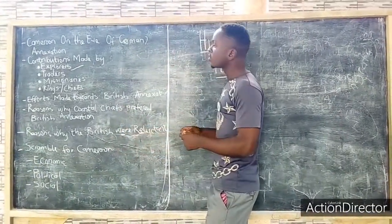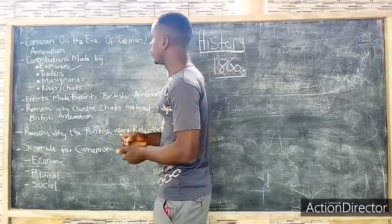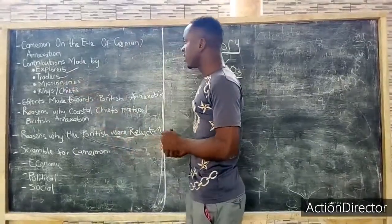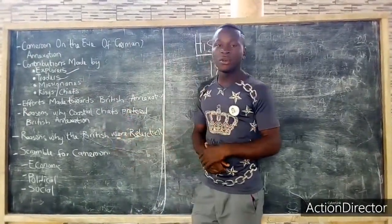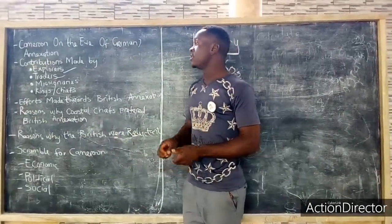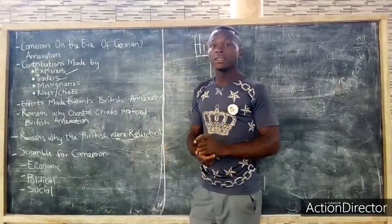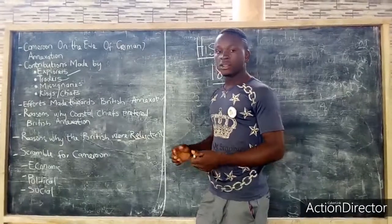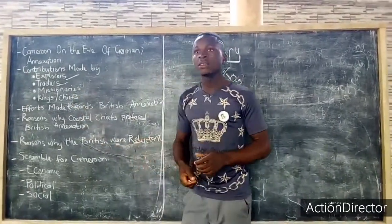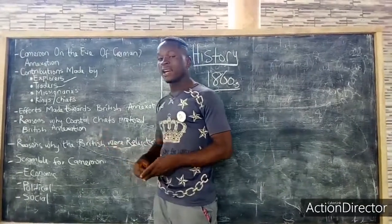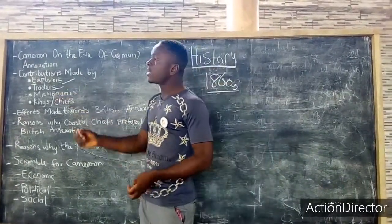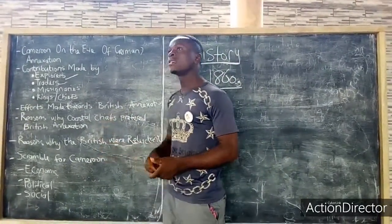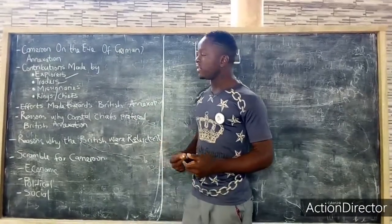We will be talking about the contributions of the traders in the annexation of Cameroon. The traders lobbied with the Cameroon coast chiefs, telling them to accept the annexation of their territory. The traders also brought goods on credit, giving them to the Cameroon coast chiefs to encourage acceptance of annexation. Traders also sold their goods at cheaper prices to encourage Cameroonians to accept the annexation of the territory.